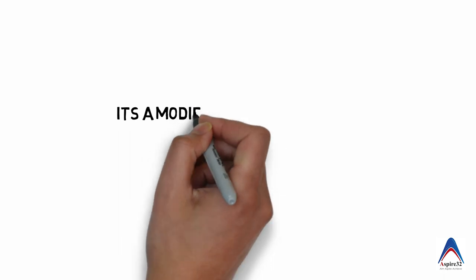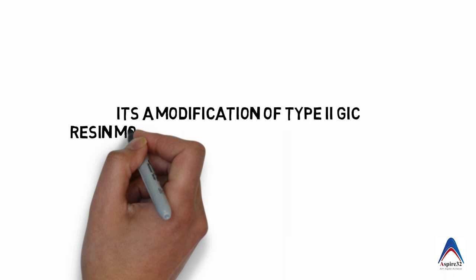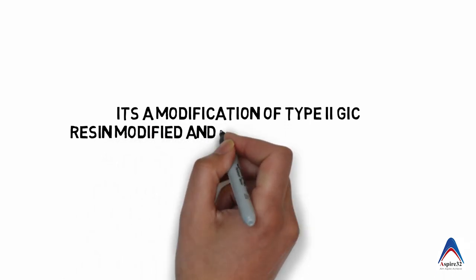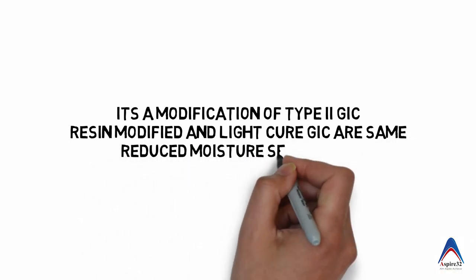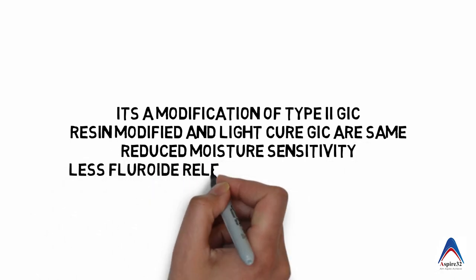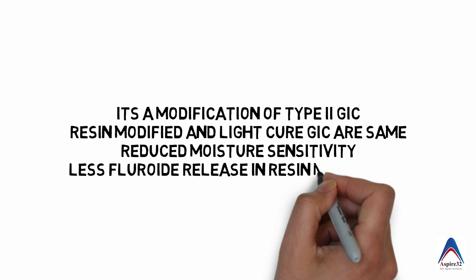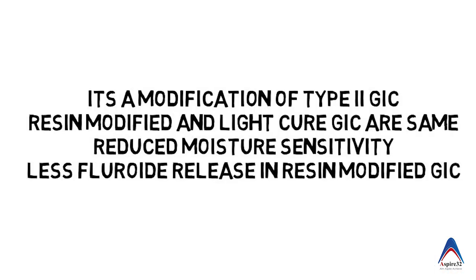A few important points to remember: light cure GIC is actually a modification of type 2 conventional GIC, so it is a restorative GIC. It is also called resin modified GIC — resin modified GIC and light cure GIC are the same. The main advantage of light cure GIC is less moisture sensitivity. One disadvantage is that the fluoride release may be less.